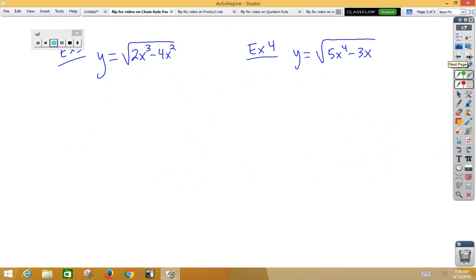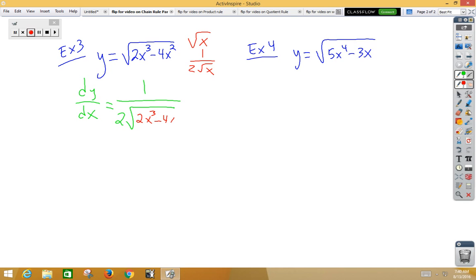A third example, dy dx is equal to, well now our outside function is the square root function. And we've memorized that the derivative of the square root function is 1 over 2 root x. So we start with the derivative of the outside, 1 over 2 root. Don't change the inside, 2x cubed minus 4x squared. And now we're going to multiply by the derivative of the inside function, which would be 6x squared minus 8x.